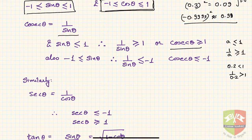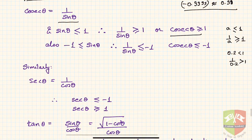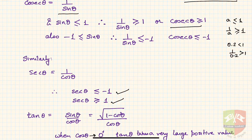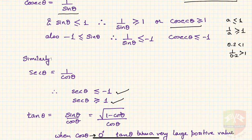Similarly, secant theta equals 1/cosθ, so secθ ≤ −1 or secθ ≥ 1. The ranges of cosecant and secant are the same: both are either less than or equal to minus one, or greater than or equal to one.